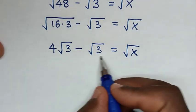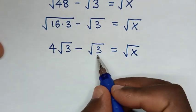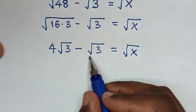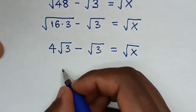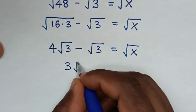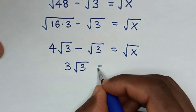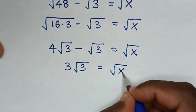Square root of 3 is the same as 1 square root of 3. So, 4 square root of 3 minus square root of 3 is 3 square root of 3, which equals square root of x.